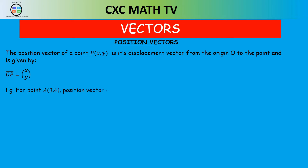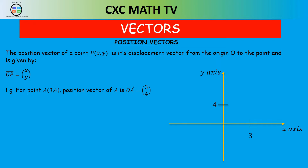For example, the point A which is (3, 4): the position vector of A is vector OA and it is (3, 4). On the graph, the x-value is 3 and the y-value is 4, with an arrow pointing from the origin towards point A. For point B which is (-5, 7), the position vector of B is vector OB and it is (-5, 7) — always going from the origin to the point.